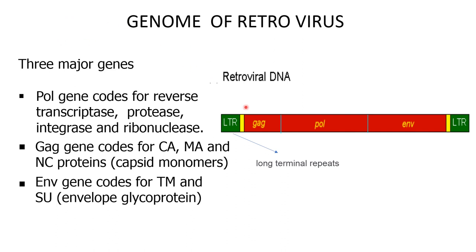The genome of a retrovirus consists of a long terminal repeat, gag gene, pol gene, env gene, and again a long terminal repeat. The pol gene encodes reverse transcriptase, protease, integrase, and ribonuclease. The gag gene codes for capsid monomers CA, MA, and NC proteins, whereas the env gene codes for envelope glycoproteins TM and SU.